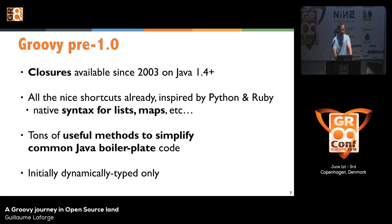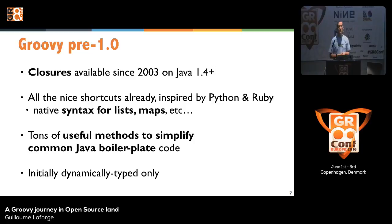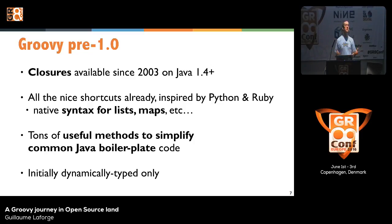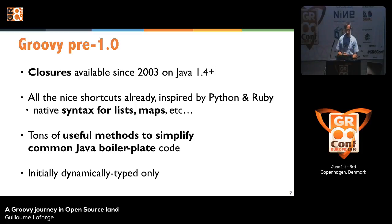Even back in 2003 there were closures — they've been there for a long time. The native syntax for lists and maps was there already, and all the nice GDK shortcut methods, at least the initial ones, were there as well. So the Groovy you're using today is pretty much what was envisioned; the first version of Groovy was already pretty much like that. And it was purely dynamically typed.